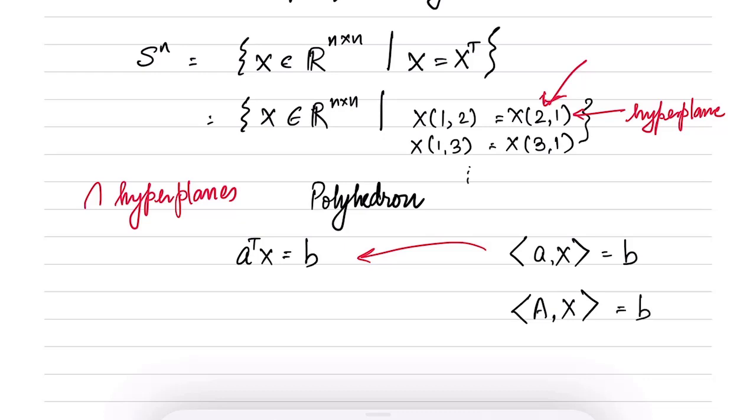So this is a specification of a hyperplane in terms of matrices. And you can in fact see that the equation X(1,2) equal to X(2,1) is exactly of this form. To see the link between these two, all you have to do is to pick A appropriately.